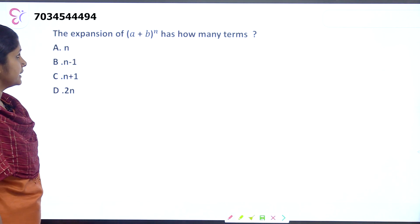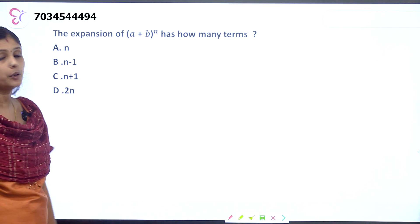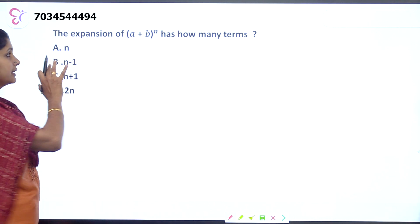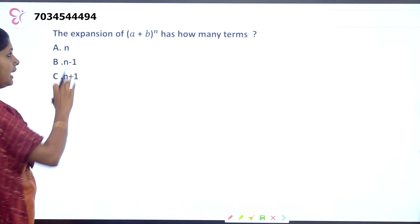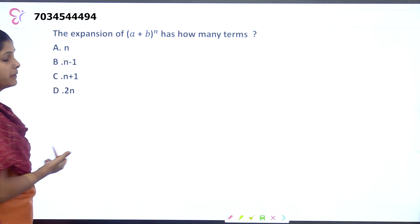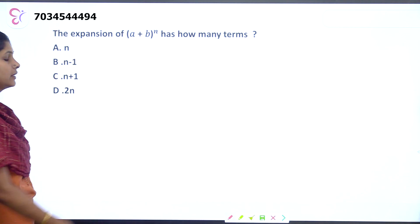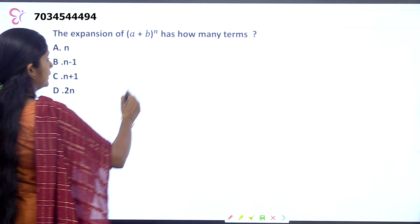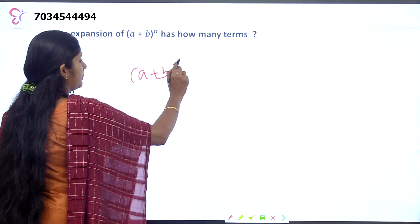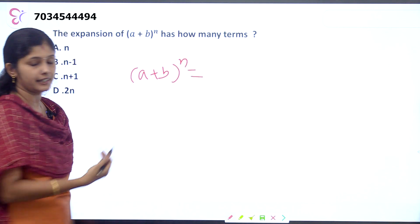The expansion (a−b) all raised to n has how many terms? (a−b) raised to n is an expansion. The options are n, n−1, n+1. Now, what is (a−b) all raised to n?